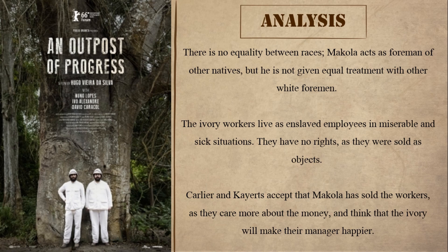There is no equality between races. McCullough acts as foreman of other natives, but he is not given equal treatment with other white foremen. The ivory workers live as enslaved employees in a miserable and sick situation — they have no rights and were sold as objects. Carlier and Cajers accept that McCullough has sold dead workers and they care more about money and the ivory making the manager happy. This is a characteristic of imperialism.